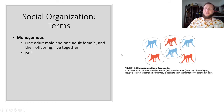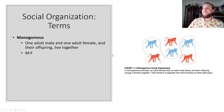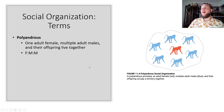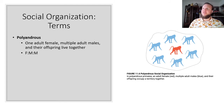Monogamous social organization consists of one adult male, one adult female, and their offspring living together — gibbons are the example. Polyandrous is one adult female with multiple adult males and their offspring all living together — the tamarin is the example here.